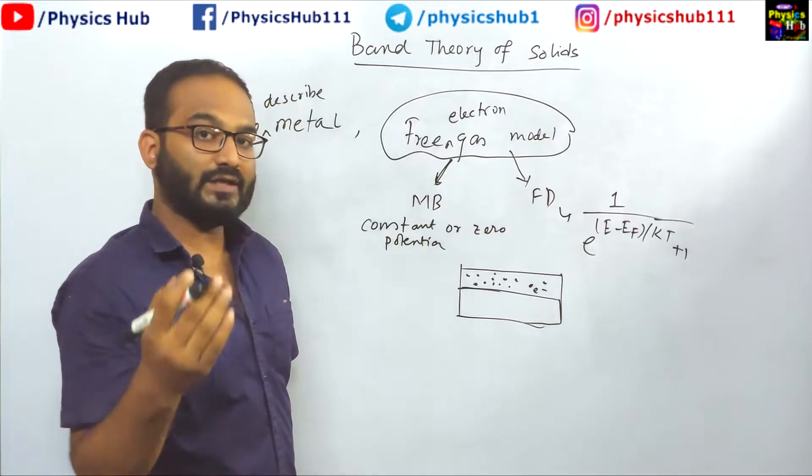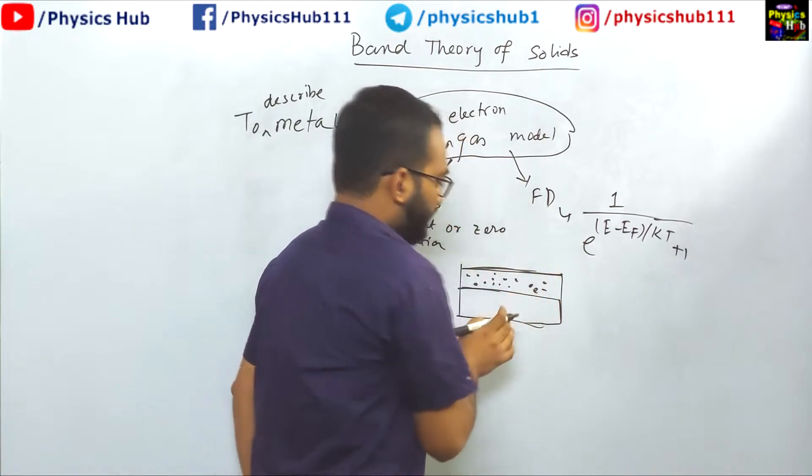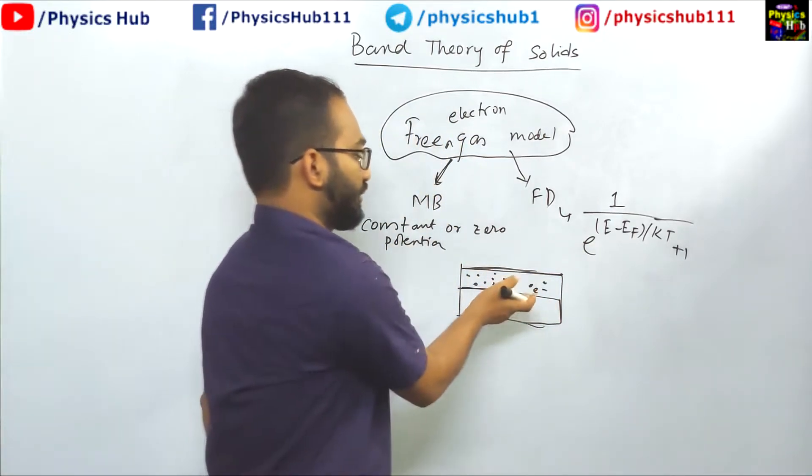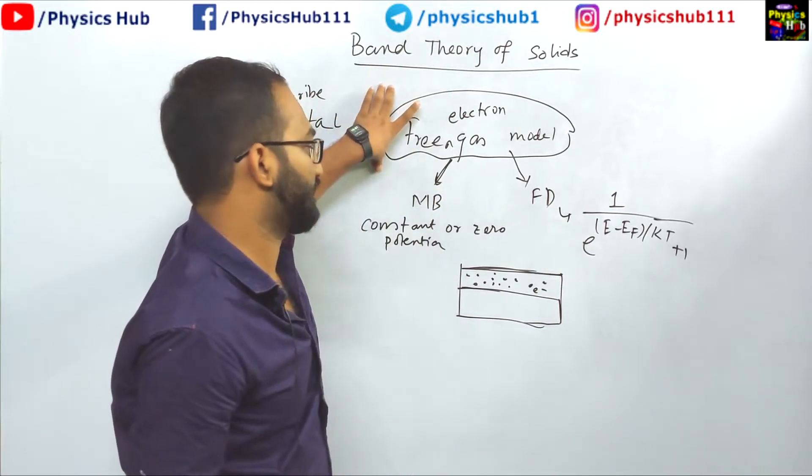They were only limited by the surface. Other than that, there was nothing to stop their motion. This oversimplification led to the failure of the free electron gas model.